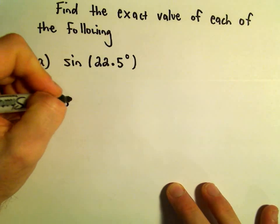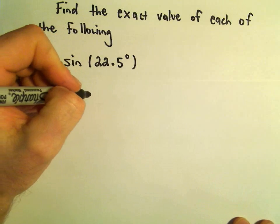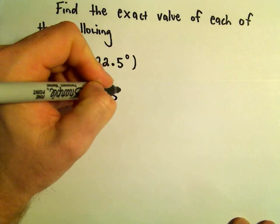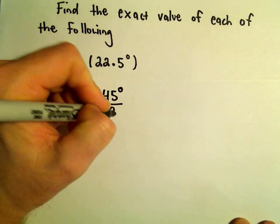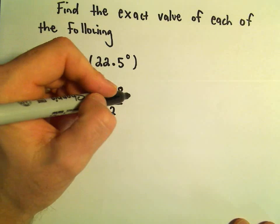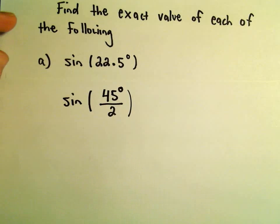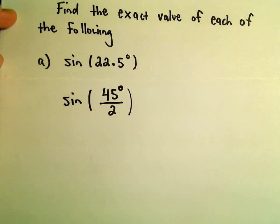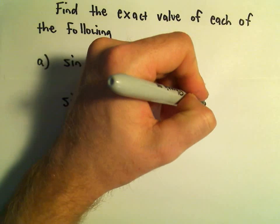Notice we could rewrite that. If you double 22.5, you get 45 degrees. So I could write 22.5 degrees as 45 degrees divided by 2. 22.5 degrees is definitely going to be in quadrant 1.